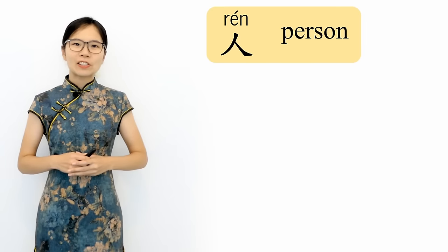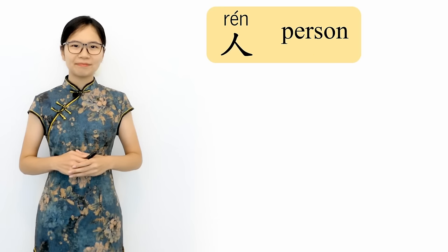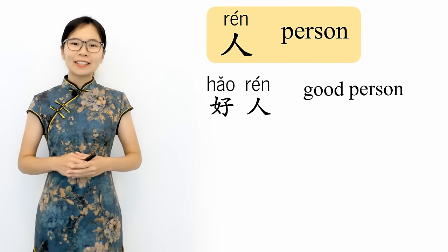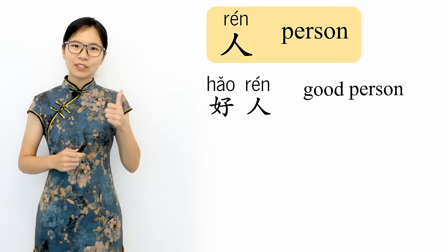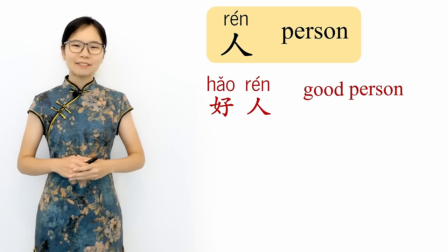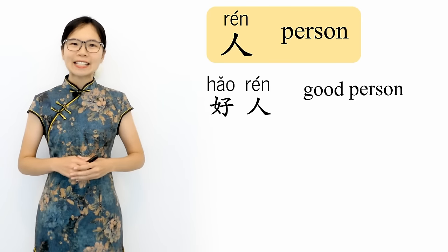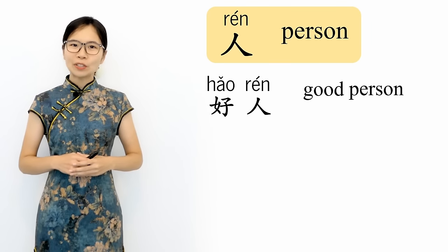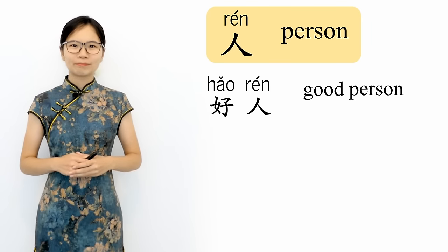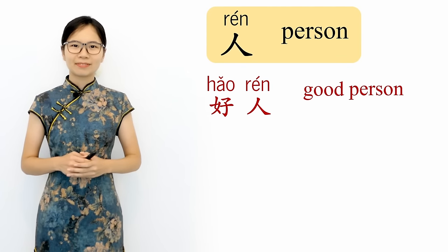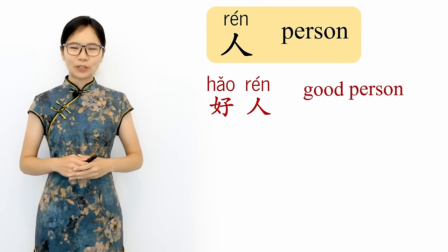Now let's take a look at some example words that use the character 人. First is 好人. The character 好 means good, so 好人 means good person. This is used to describe a person who has integrity and does good things for other people. 好人, good person.